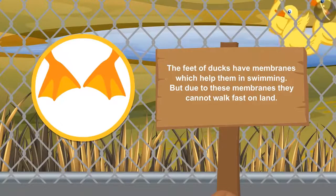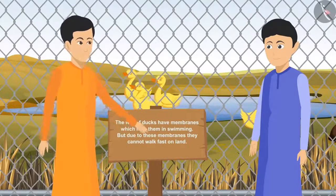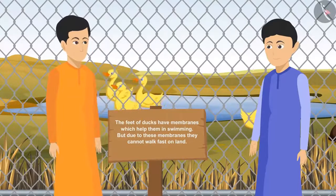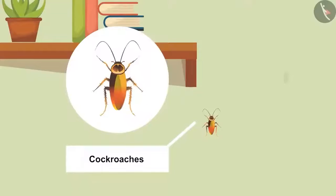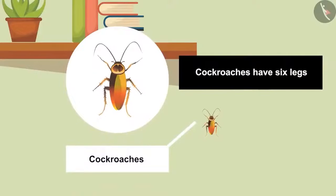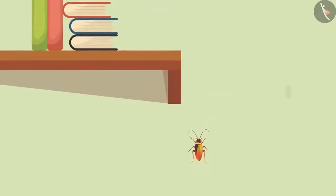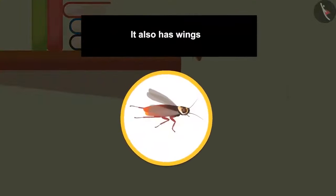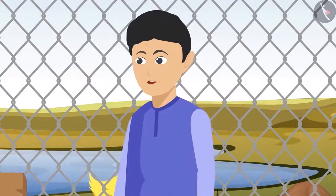Zeeshan mentioned that there is someone at his home who can also run, swim, and fly — the cockroach. Cockroaches have six legs with strong muscles that help them walk fast and even climb walls. They also have wings that enable them to fly short distances. Sikandar found cockroaches ugly and scary and suggested they look for other interesting animals.